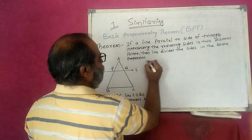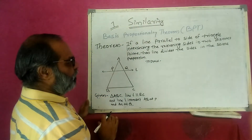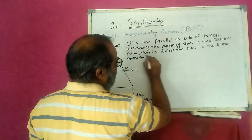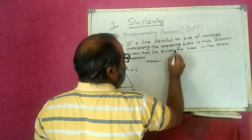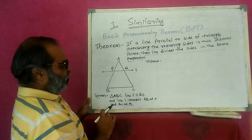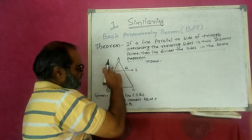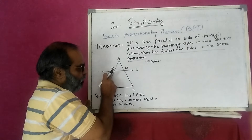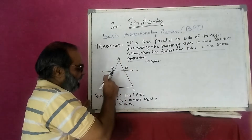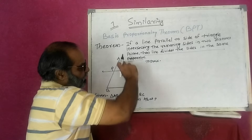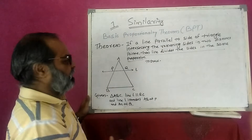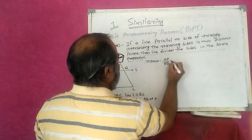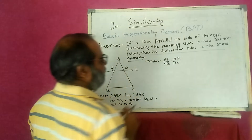Now I want to prove that the line divides the sides in the same proportion. Line L divides side AB at P and AC at Q. The parts made with point P are AP and PB, and the parts made with point Q are AQ and QC. So we want to prove that AP divided by PB is equal to AQ divided by QC.